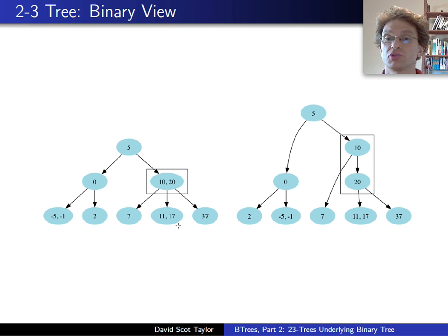So I can take this 2-3 tree on the left and imagine that it is a binary tree on the right, where this sort of big weird looking node, well, it still looks like a binary tree, right? If I want to search for a value, or in this case, I want to insert an 18, how do I do that?